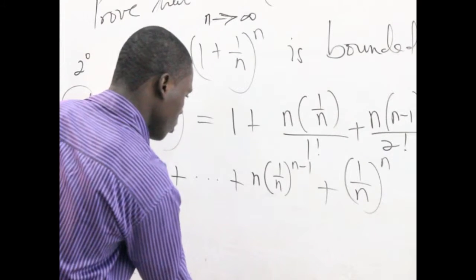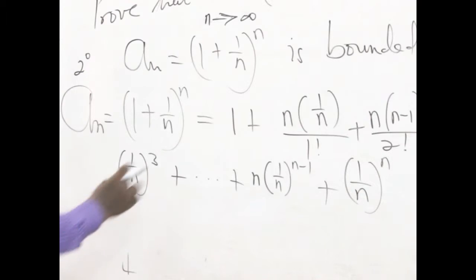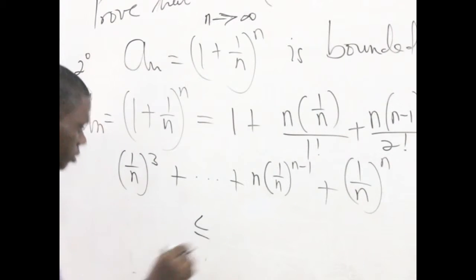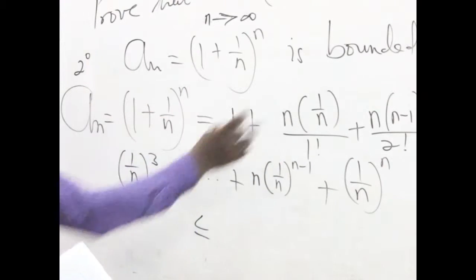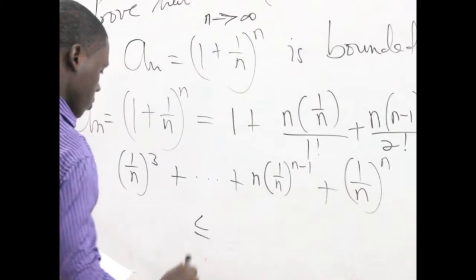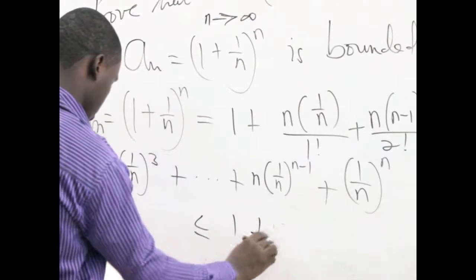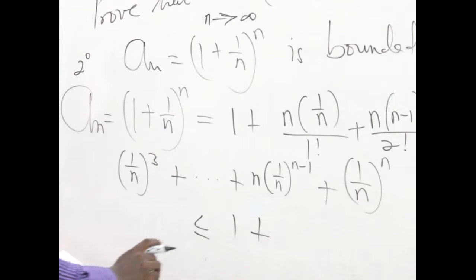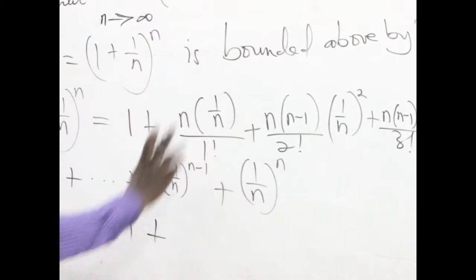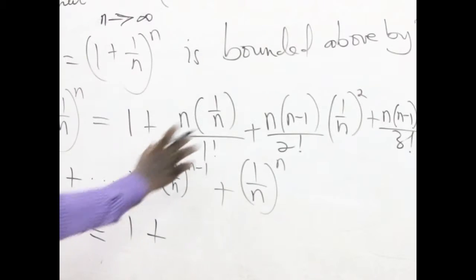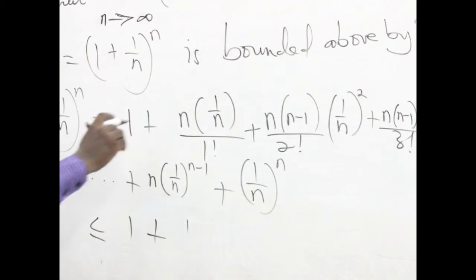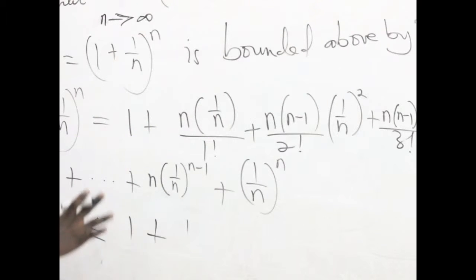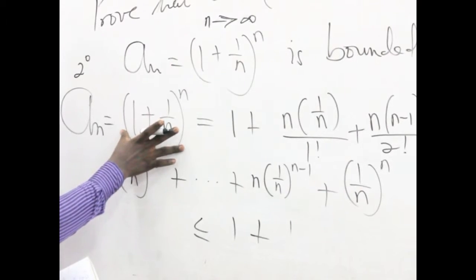So what we do is maintain the first term and then reduce the numerators — we do away with the extra factors so that each numerator becomes 1. We are changing all the numerators to 1, and that will make this expression less than what we had before.